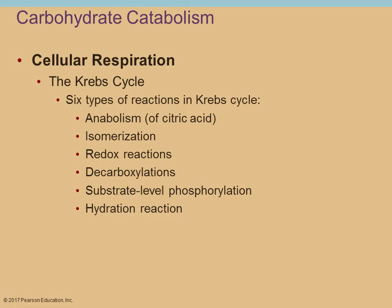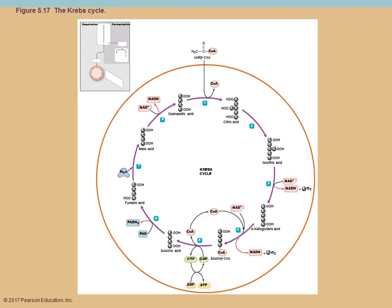There are going to be six different types of reactions in the Krebs cycle. Also be aware that the Krebs cycle has three different names: in microbiology it's called the Krebs cycle, in chemistry it's known as the tricarboxylic acid cycle, and in general biology many learn it as the citric acid cycle. They're all the same thing. In the upper left of the diagram you can see where we're located in the overall process.